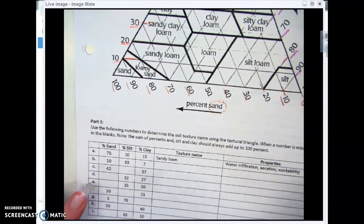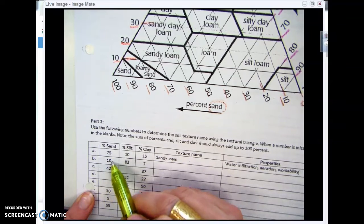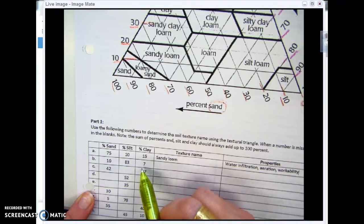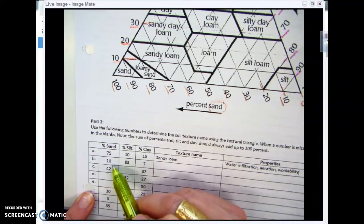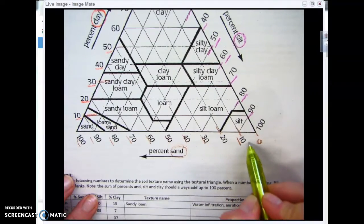We have with question B: 10% sand, 83% silt, and 7% clay. I'm going to start with the 10% sand just because 10% sand is already here on my axis.